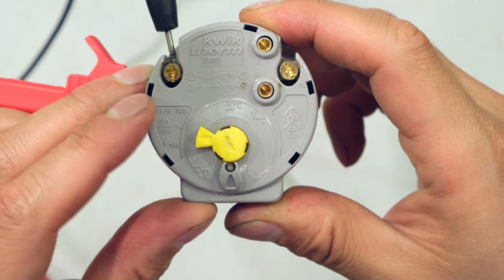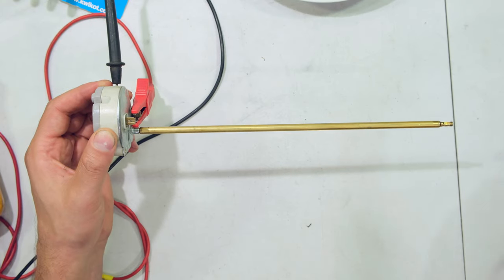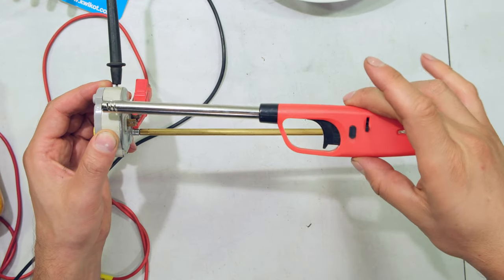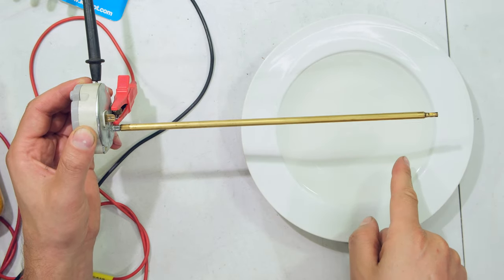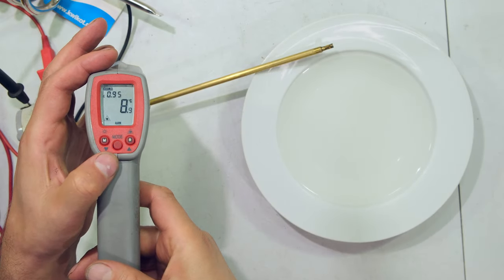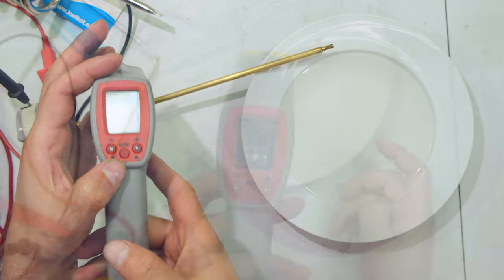Now you can do this in many different ways. You can use a lighter and just light the tip there, or you could take some hot water and immerse the probe into the water. And if you want to be really accurate, you can measure the temperature of the water. Right, so I've heated up the water a bit more. As you can see, it's 58 degrees and now I'm going to put the thermostat inside.